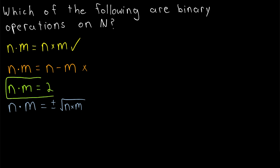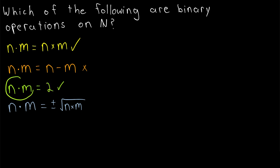Next, we've got a constant function operation: plug in any two natural numbers and it just spits out 2. This is a binary operation. It is a function because any input gets exactly one output — that output being 2. And it is closed, because whatever natural numbers we put in, we get 2 out, and 2 is a natural number. So this operation is a function and it's closed on the natural numbers, making it a binary operation on the natural numbers.